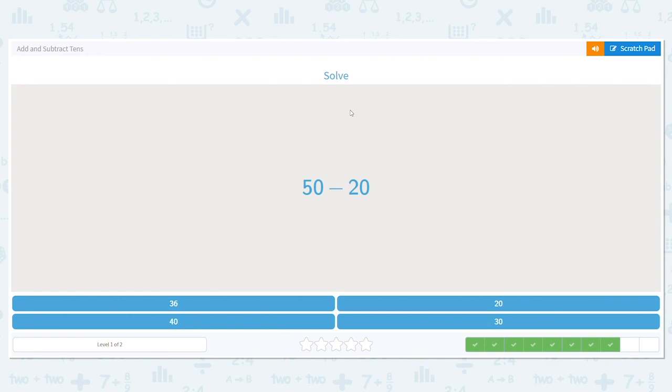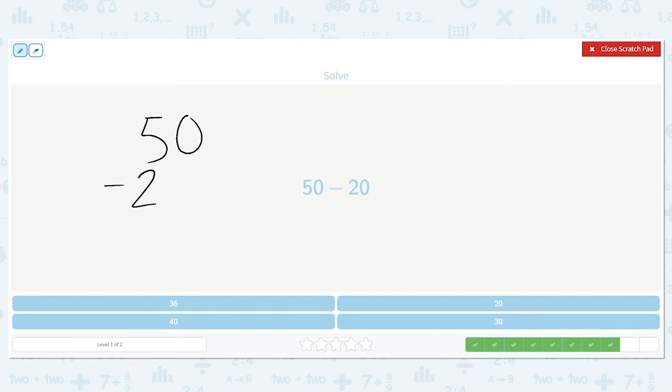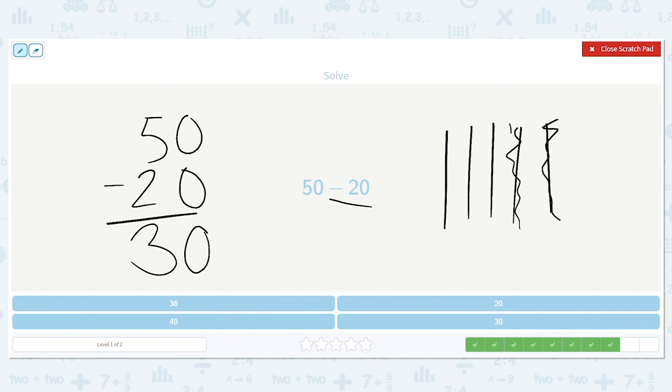50 minus 20. 0 minus 0 is 0. And 5 minus 2 is 3. Again with our sticks. 10, 20, 30, 40, 50. How many do we get rid of? 2? 10, 20. So I have 10, 20. I have 30 left. They match.